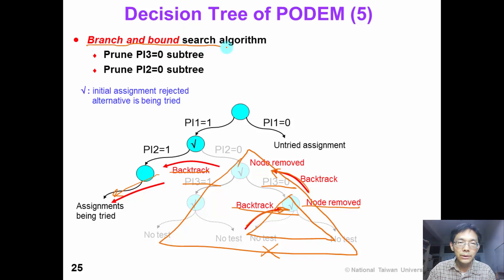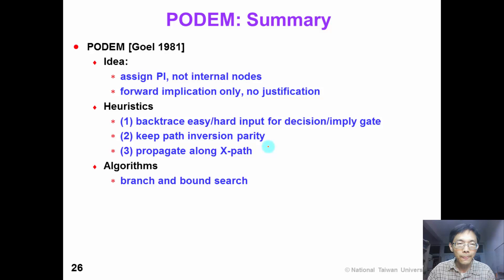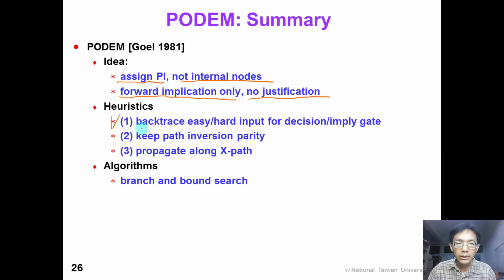In summary, the PODEM algorithm proposes to assign primary input values, not internal values, so we greatly reduce the search space. During the PODEM algorithm, we perform only forward implication — there is no justification needed, saving a lot of time. There are three heuristics proposed: heuristic number one backtrace the easy or hard input for decision or implied gates respectively, and keeps the path inversion parity for primary input value assignment. We also propagate the fault effect along the shortest X path. The PODEM algorithm is a branch-and-bound search algorithm.